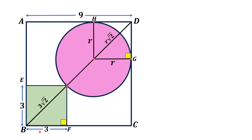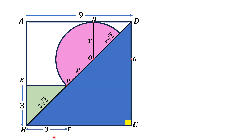Now considering the larger square: BD is its diagonal. Labeling the center as O and another point as P, OP is also a radius of the circle. The angle is 90 degrees, so BCD is a right triangle with legs of 9 units, giving a diagonal BD equal to 9√2.